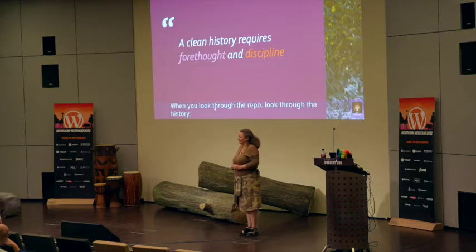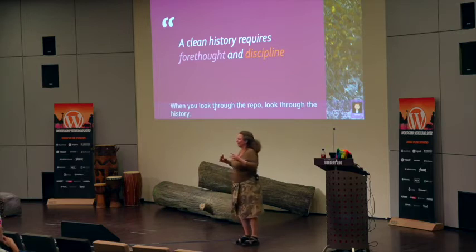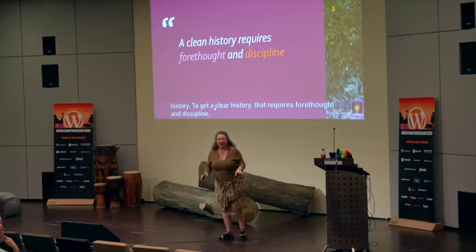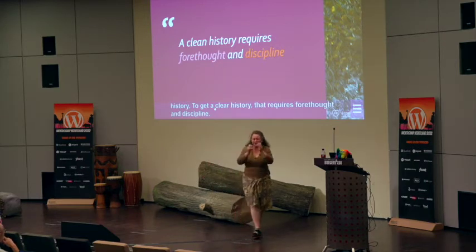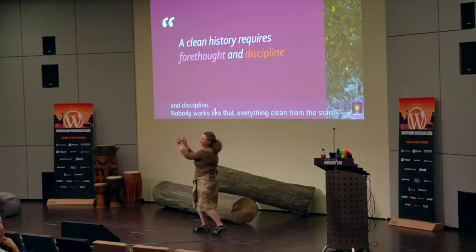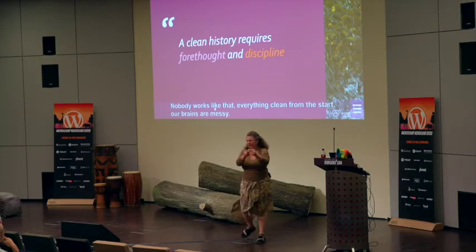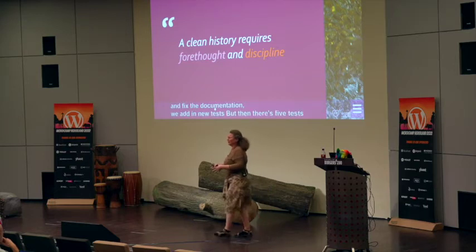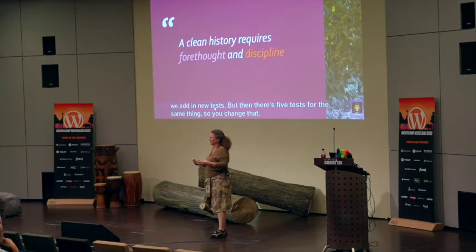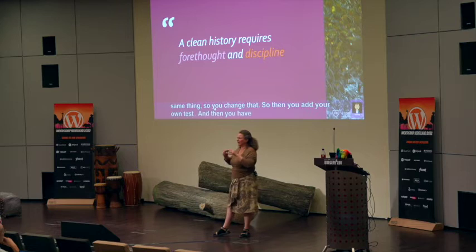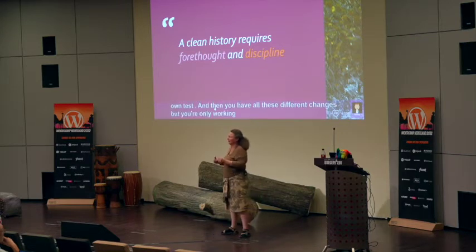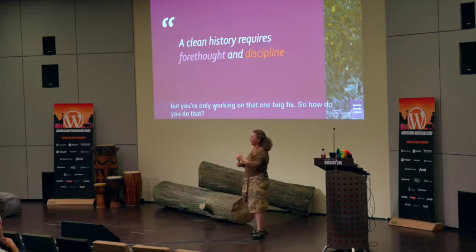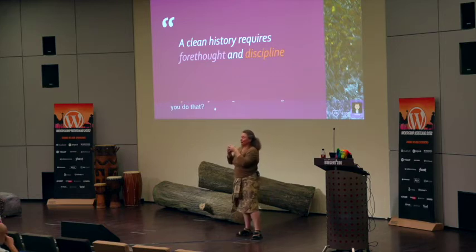To get a clean history, that requires foresight and discipline. I'm not talking about deciding everything in advance. Nobody works like that — our brains are messy. We start working on a bug fix and then notice the documentation is wrong, so we fix that, then add a new test, and then realize there are five tests for the same thing that should have been in a data provider. So we change that to a data provider and add our own test. Now we have all those different changes but were only working on one bug fix. The discipline you need is to make very small commits and commit often.